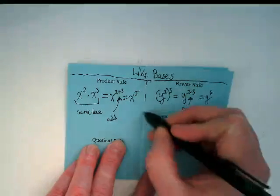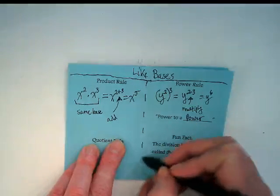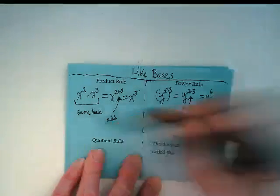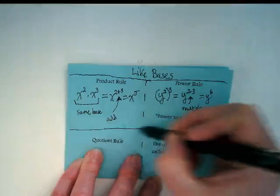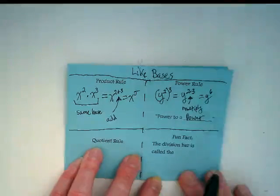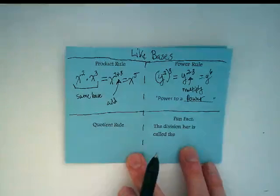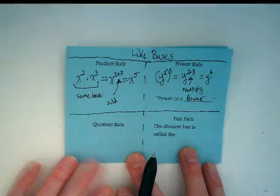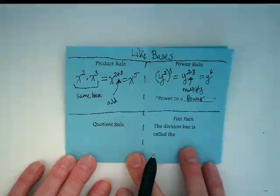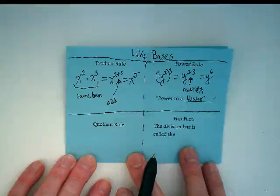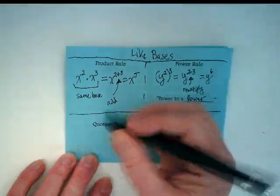I want us to divide our page up a little bit by putting dashes down the middle and another straight line across the bottom two spaces. Who were my people that had the Quotient Rule? That was Table 3? Okay. The Quotient Rule.